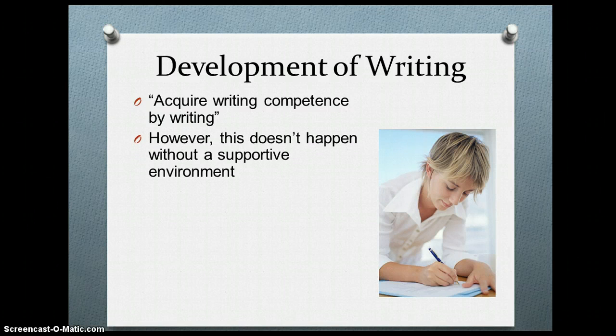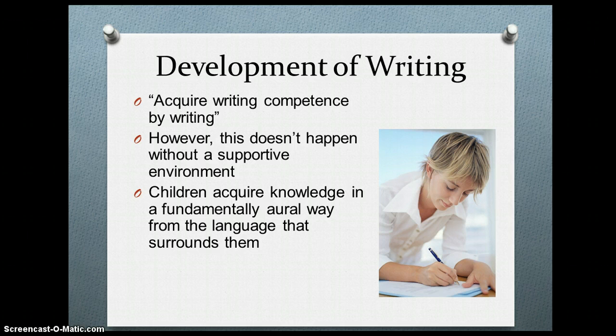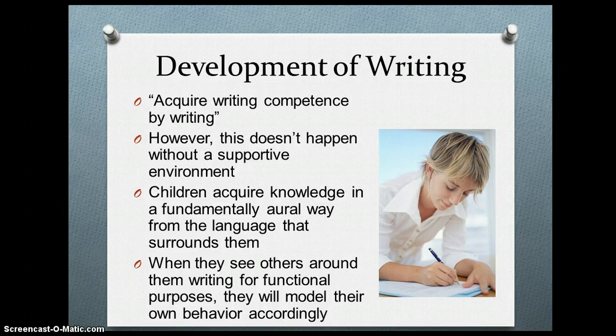This happens in a supportive environment where the child is receiving input, where they're being read bedtime stories, where they're observing role models reading and writing, where they're discussing and talking to different people within the home environment. Children acquire knowledge in a fundamentally aural way from the language that surrounds them, which reinforces that idea that they must receive input. When they see others around them writing for functional purposes, they will model their own behavior accordingly.